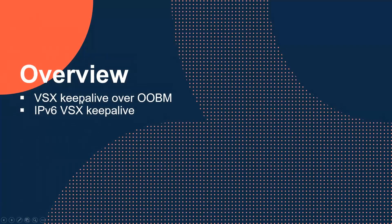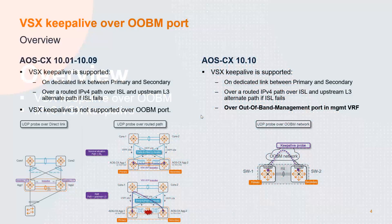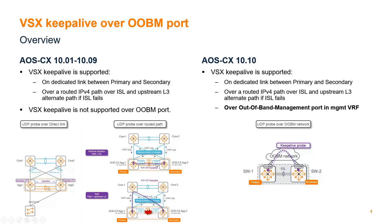So this is the overview. We have really two new features: support for Keep Alive over out-of-band management port, and support for IPv6 for Keep Alive for VS6. As of 10.01 through 10.09, VS6 Keep Alive was supported on a dedicated link between the primary and secondary VS6 nodes, or over a routed IPv4 path — typically a transit VLAN over the ISL. In case of ISL failure, an upstream layer 3 alternate path was used to ensure UDP probe exchange between primary and secondary within the VS6 Keep Alive dead timer.